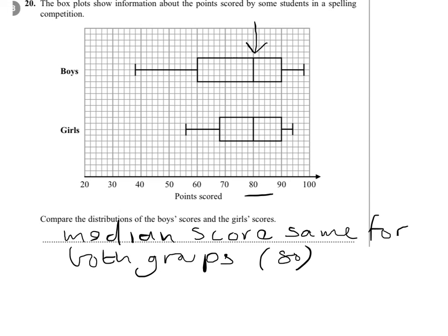Now for the second point, the box plots also provide information about how spread out the scores are. We've got two measures of spread here. The first one is the interquartile range.